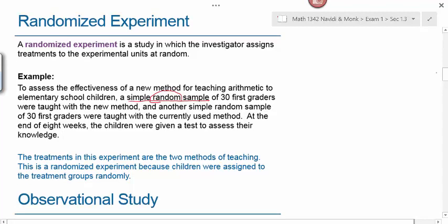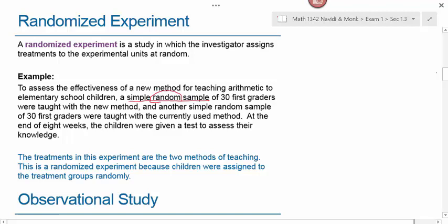That's why you want to use randomization in your experiment. Using a random sample means that in any group of 30 first graders, you may have some with higher IQs and some with lower IQs, but they should be spread out evenly or at least randomly among the two groups with very little difference between the average IQs.